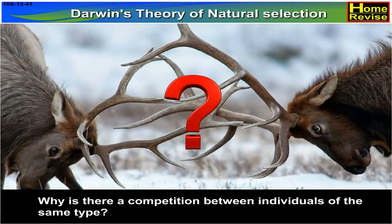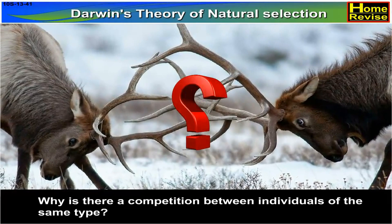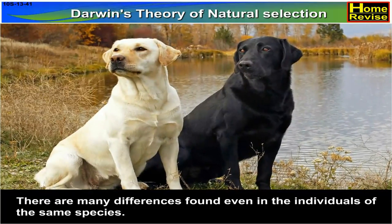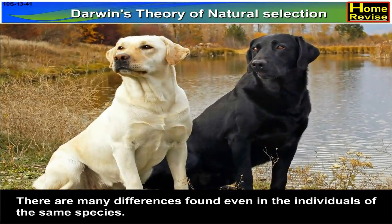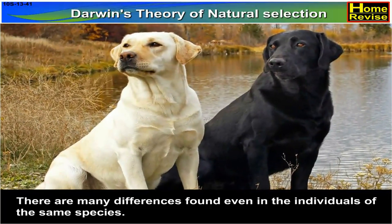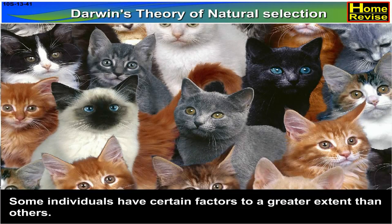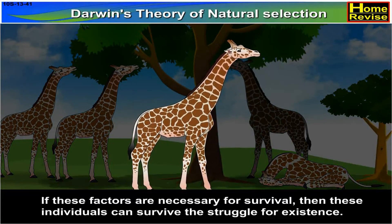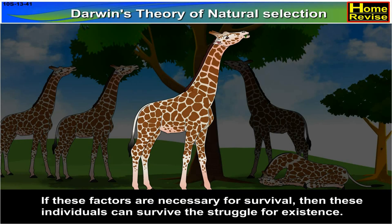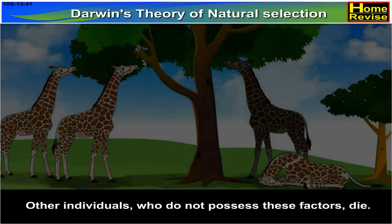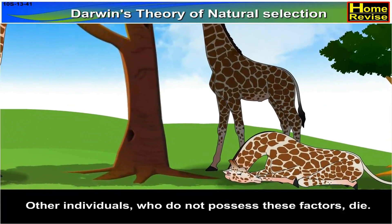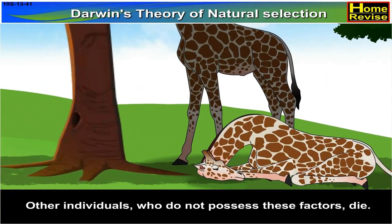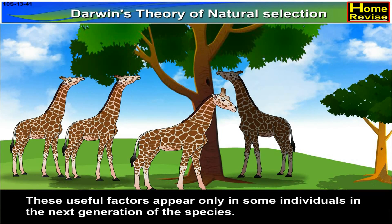Why is there competition between individuals of the same type? There are many differences found even among individuals of the same species. Some individuals have certain factors to a greater extent than others. If these factors are necessary for survival, then these individuals can survive the struggle for existence. Other individuals who do not possess these factors die. These useful factors appear only in some individuals in the next generation of the species.